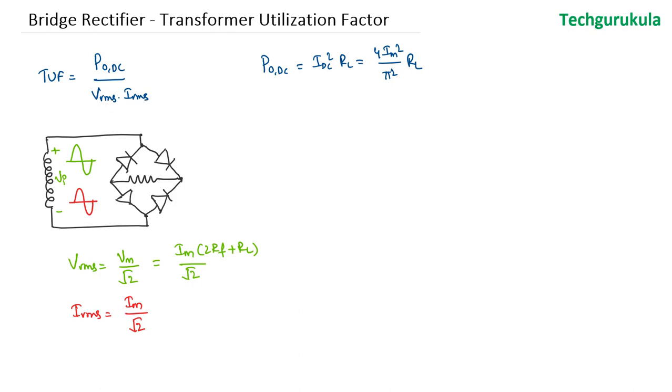Now as we know both Vrms and Irms, we can find what is the input power. Now we can find the transformer utilization factor, which is the output DC power 4Im square over pi square times RL over the Vrms, Im over square root 2 times 2Rf plus RL times Im over square root 2.